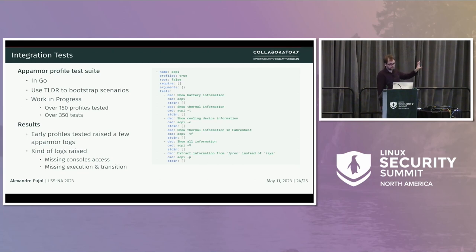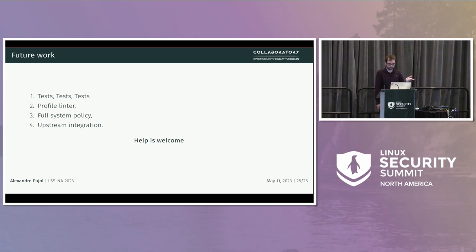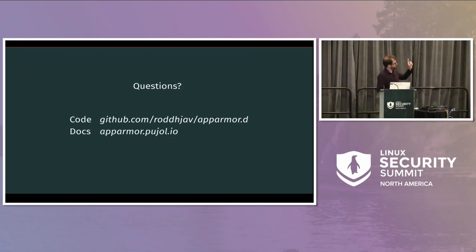For future work: there are tests, tests, and more tests to continue. As already mentioned, there are some linters to do later, some full system policy to implement, and at some point there will be more integration with AppArmor itself — but obviously this will be done only after the tests are done, otherwise it would be useless. Please help here — we need people to test this stuff with their own software, their own Linux distribution, their own setup. That can only help us. And I forgot to mention: you have everything on GitHub, but there is also a nice documentation website if you want to test this stuff.